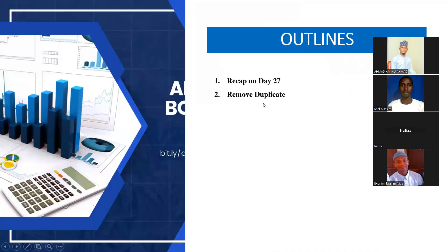We start by showing our activities for the day — outlines of what we are to cover. Today we have only one outline. We are going to do a recap on what we discussed on the 27th, that is last Saturday. Then we'll talk about remove duplicates. That's all what we are going to discuss for today.